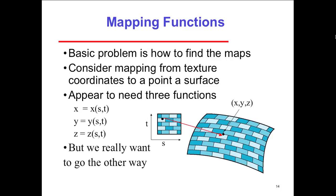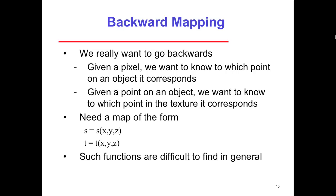The basic problem is how to find the mapping functions — consider mapping from texture coordinates to a point on a surface, etc. We really want to go the other way: backward mapping. Given a pixel, we want to know which point on the object it corresponds to; given that point on the object, we want to know which point in the texture it corresponds to. Such functions are difficult to find in general. One solution is two-part mapping: first map the texture to a simple intermediate surface, for example a cylinder, then apply that to the target object.